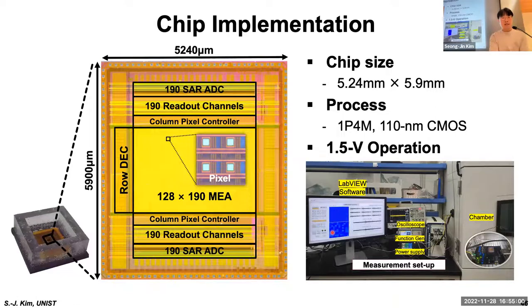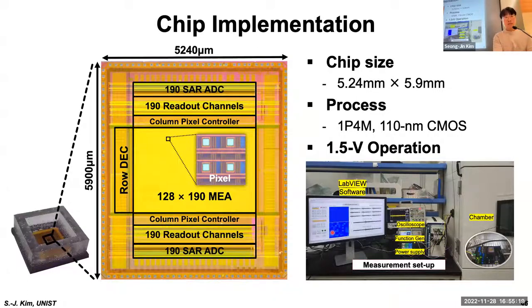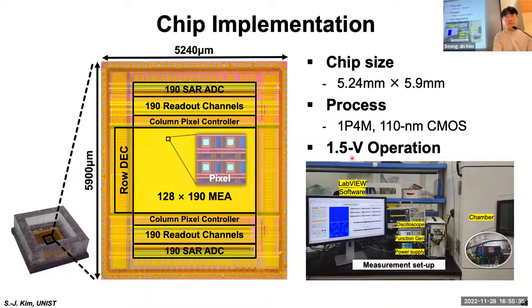The chip micrograph shows the prototype fabricated in 110 nm CMOS. The chip size is 5.4 mm × 5.9 mm, containing a 128×190 MEA with 190 readout channels on top and bottom of the array. All operation runs from a 1.5 V supply. After packaging, PDMS wall and epoxy treatment were applied for the in-vitro experiment.